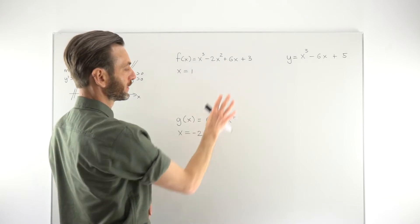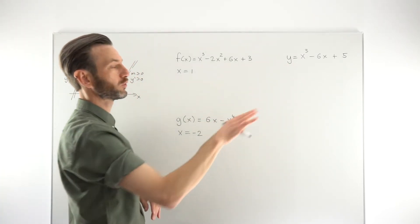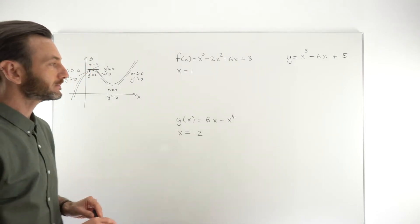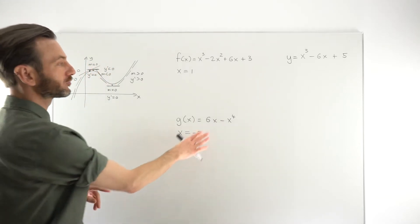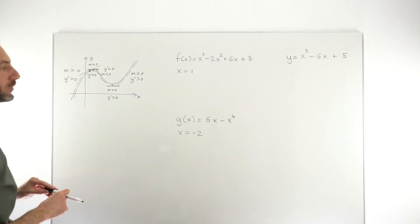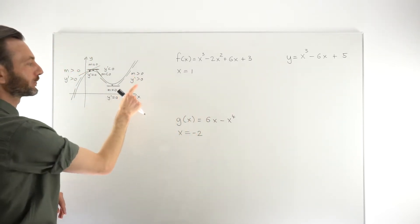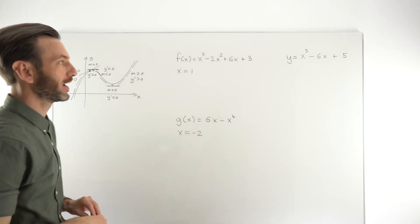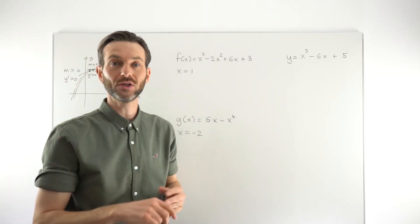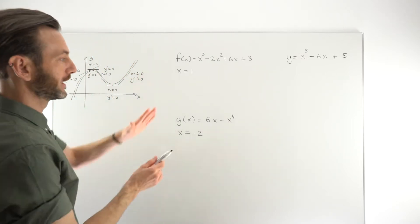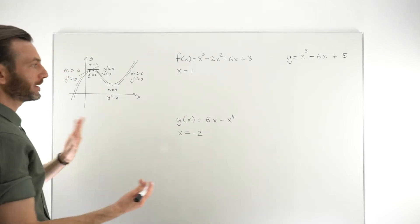When we look at example questions and try to determine whether a function is increasing or decreasing at a particular point, all we're really doing is taking the derivative and evaluating it at that point — effectively giving us the gradient of the tangent line. We don't need to draw graphs; we can do this purely as an algebraic process, trusting that the derivative gives the same result as the gradient.